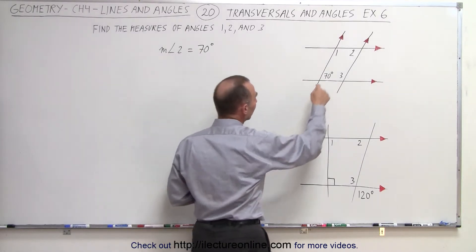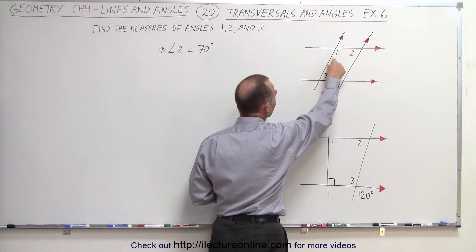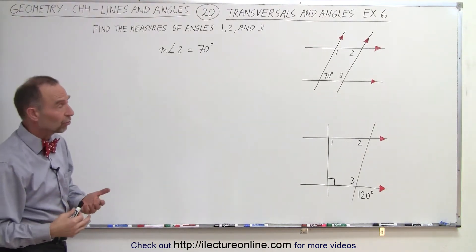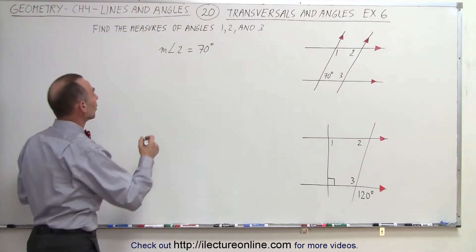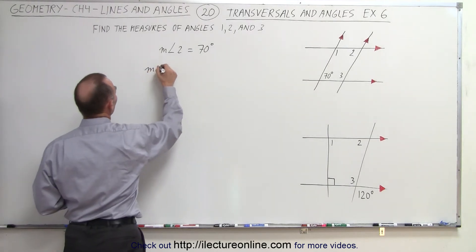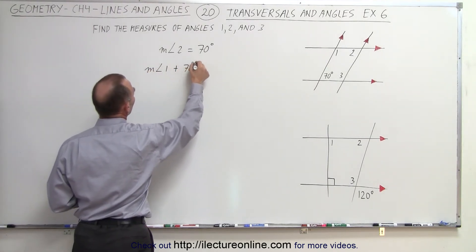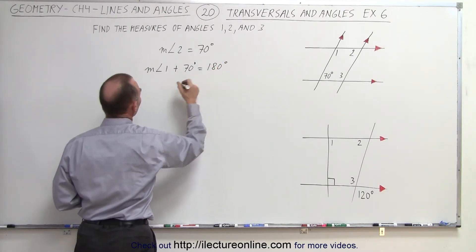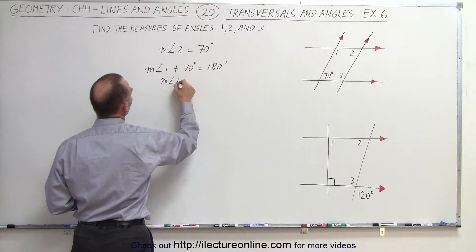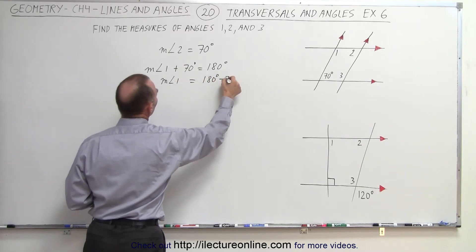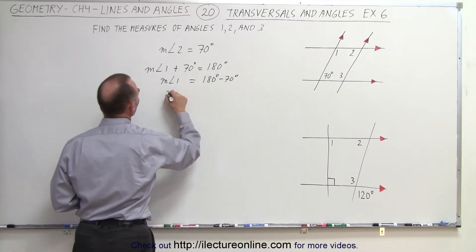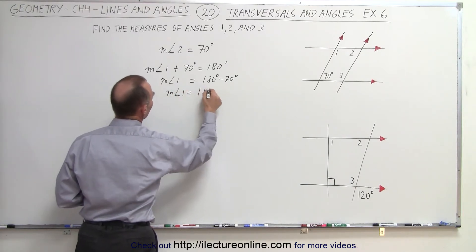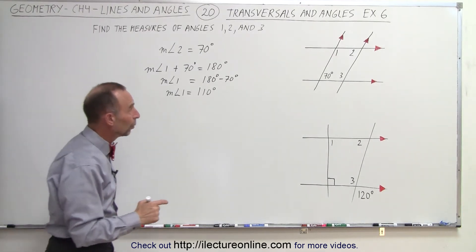Then we can take a look at angle 1 and 70 degrees. We know that those are what we call consecutive interior angles, and those measures must add up to 180 degrees, which means that the measure of angle 1 plus 70 degrees must equal 180 degrees. Moving that across, the measure of angle 1 is equal to 180 degrees minus 70 degrees. Therefore, the measure of angle 1 must be equal to 110 degrees.